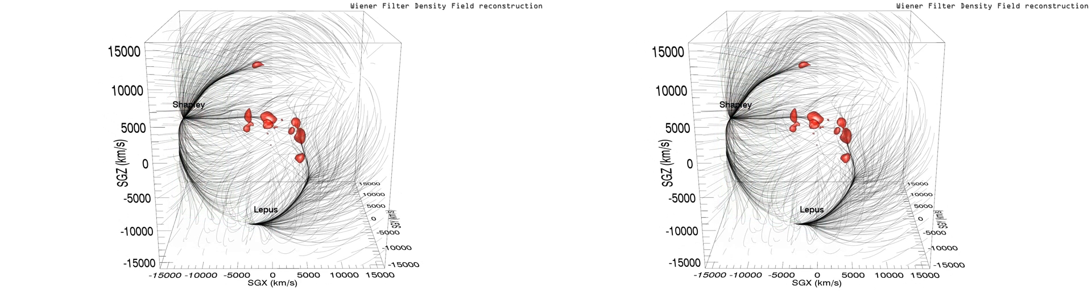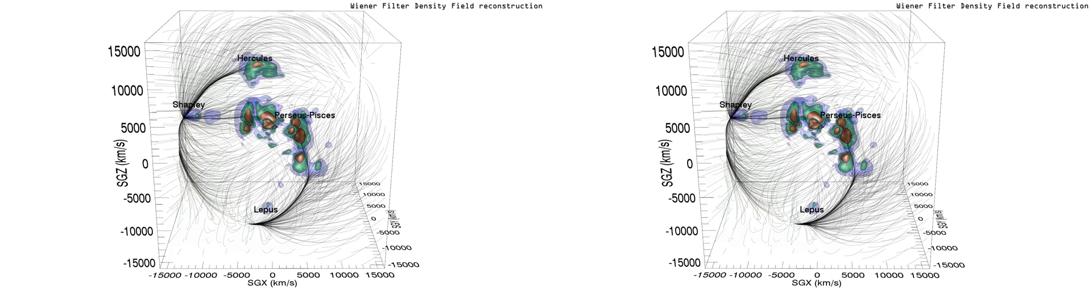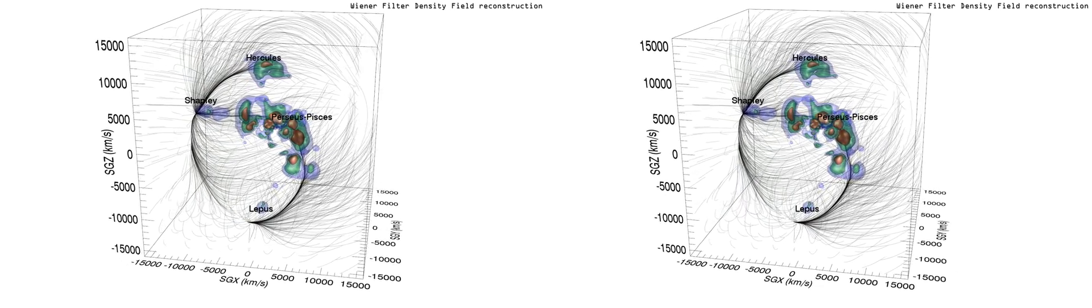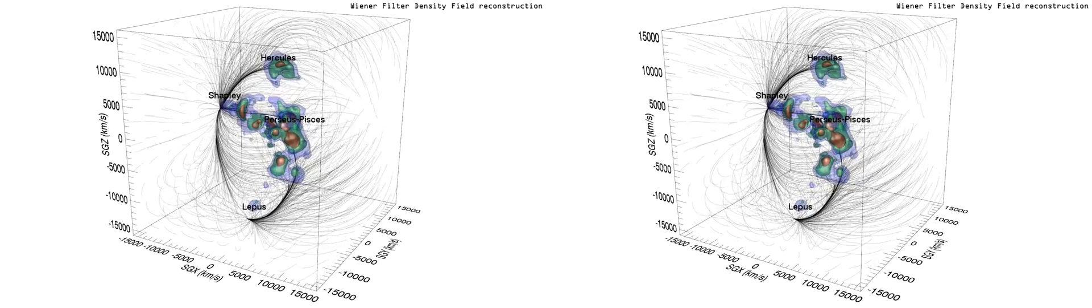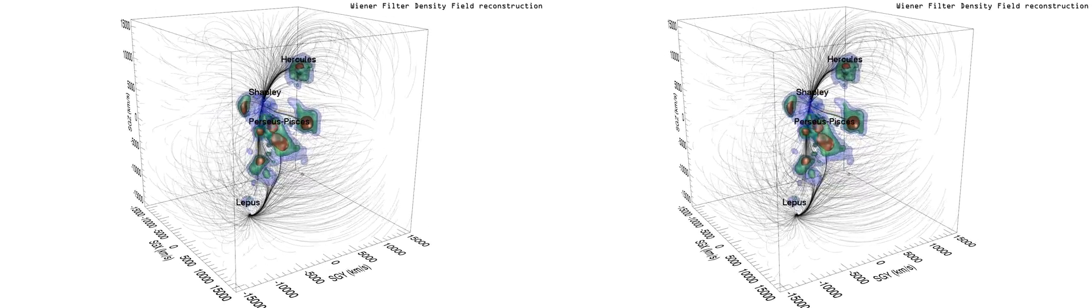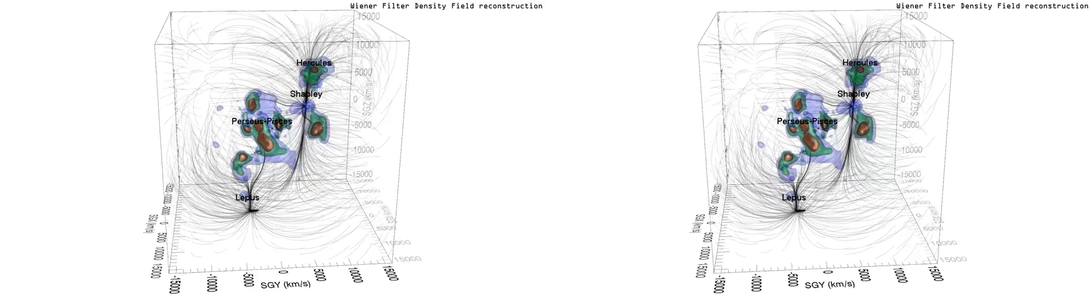Contours transition to the Wiener filter over density field. Contours are prominent near the center, where the peculiar velocity information is dense and accurate, but diminishes at large distances from the center, where information is sparse and uncertain.